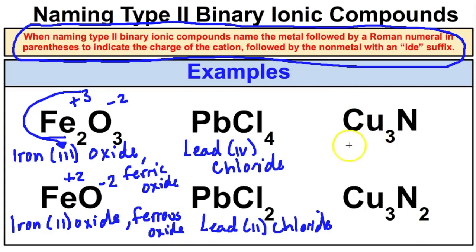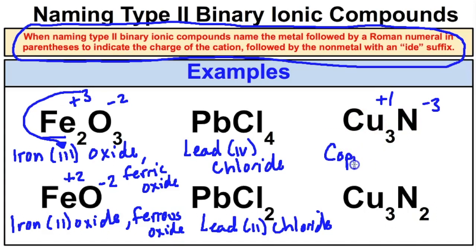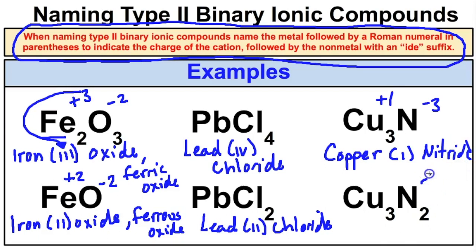In the next example, nitride has a negative 3 charge and there is only one of them, so copper must have a positive 1 charge for the charges to add up to 0. The name is copper(I) nitride. In the compound below it, nitride is still negative 3, and 2 times negative 3 is negative 6, so 3 times positive 2 equals positive 6 — giving us copper(II) nitride.